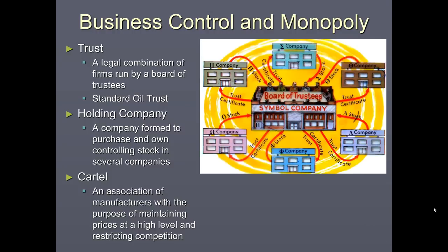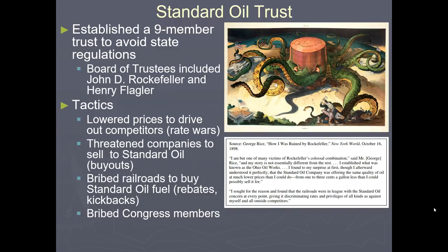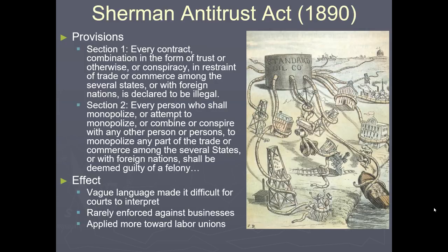A trust and a monopoly are almost the same thing. A holding company is a company formed to purchase and own controlling stock in several different companies — the Yum Corporation (Taco Bell, KFC, Long John Silver) is an example. There were many political cartoons depicting Standard Oil as an octopus controlling the government. The Sherman Antitrust Act was very vague, and it wasn't until 1914 that it was reinforced with the Clayton Antitrust Act, which defined the terms monopoly and trust and made them enforceable, along with the leadership of Theodore Roosevelt. A political cartoon called 'The Bosses of the Senate' shows trust organizers standing over Congress members, controlling what's going on in government.